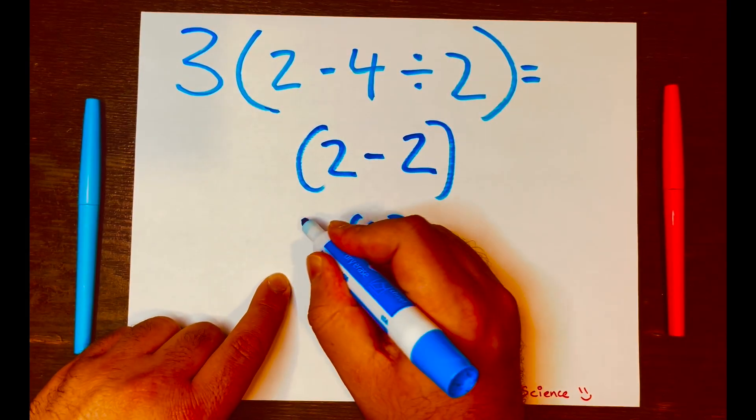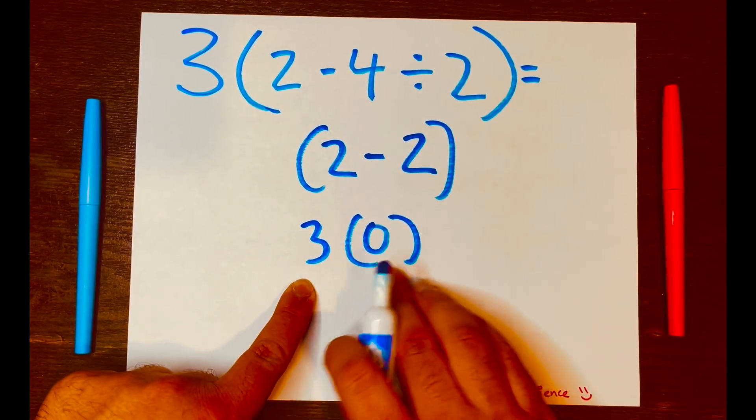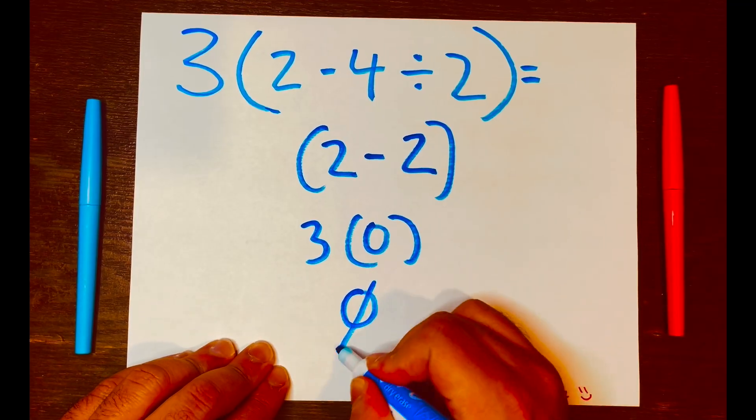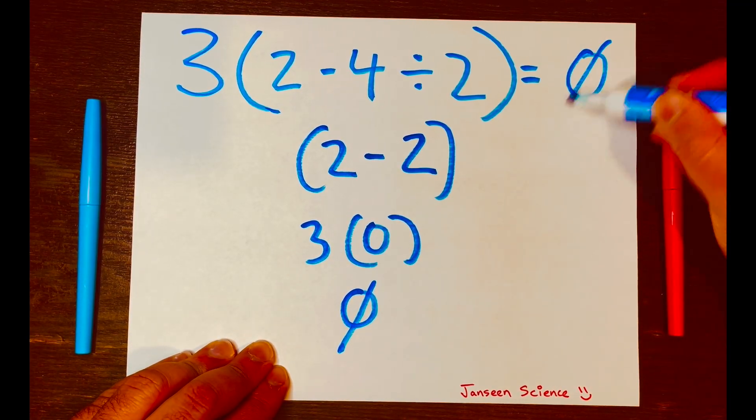And then bring down the three. And now you just have three times zero, which is zero. So your answer is zero. And there you go. Easy.